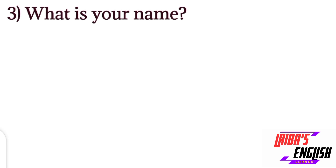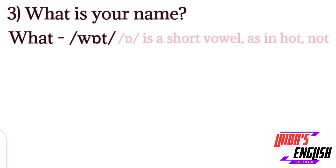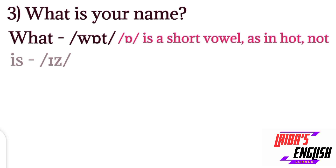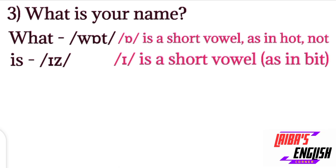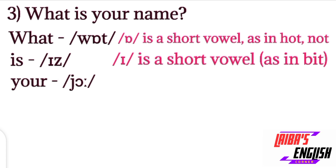The next sentence is: What is your name? If we speak this sentence fluidly, we say 'what's your name?' For 'what': W sound at the start, then a short 'a' vowel sound like in 'hot,' 'not,' 'pot,' 'caught,' and then the 'ter' sound at the end. For 'is': a short 'e' sound and a 'z' sound — a short vowel as in 'bit,' 'hit.'